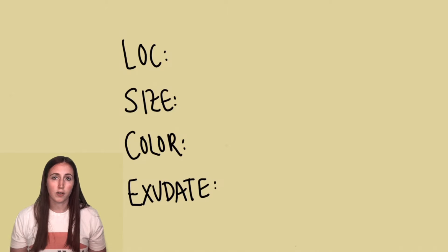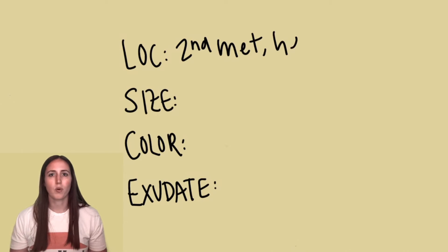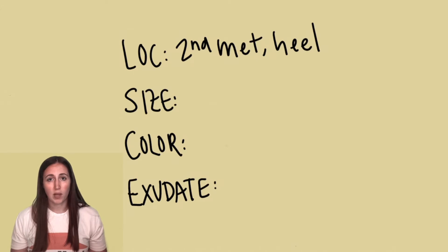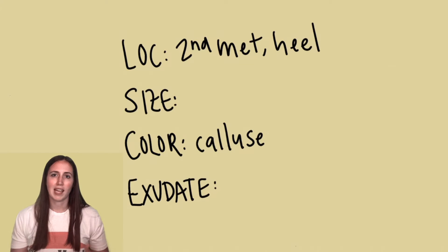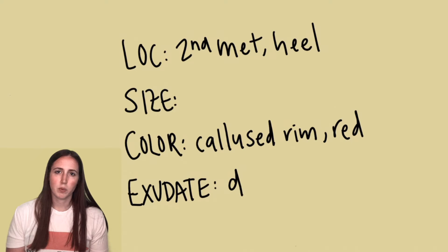Neuropathic or diabetic ulcers happen because the patient can't feel their feet, so they get a little cut or scrape on their foot, and the more they walk on it, the more it progresses and worsens. Because of where they are — usually the weight-bearing surfaces of the foot, so the second metatarsal area or the heel — the wound will appear with a calloused rim around a red wound bed. They're similar to arterial wounds in that they're usually pretty dry.